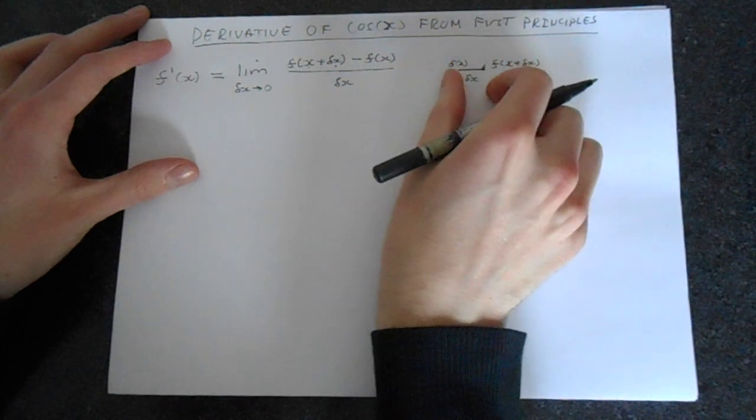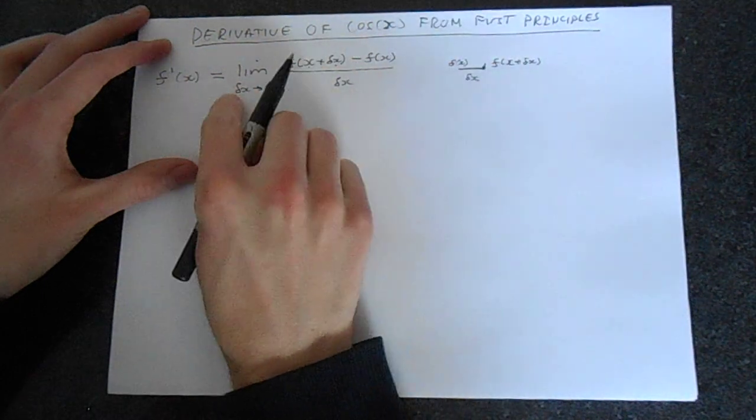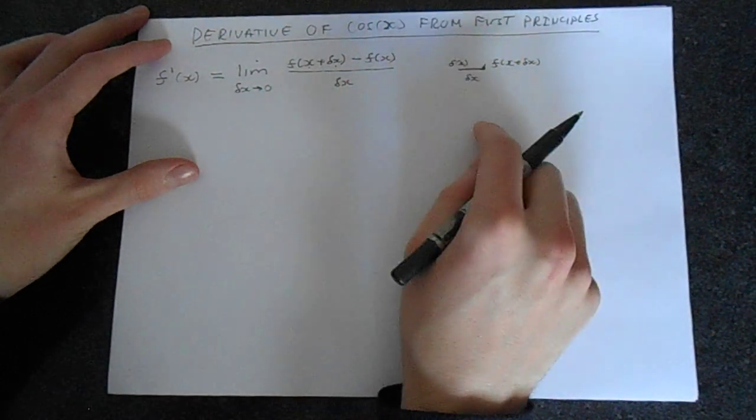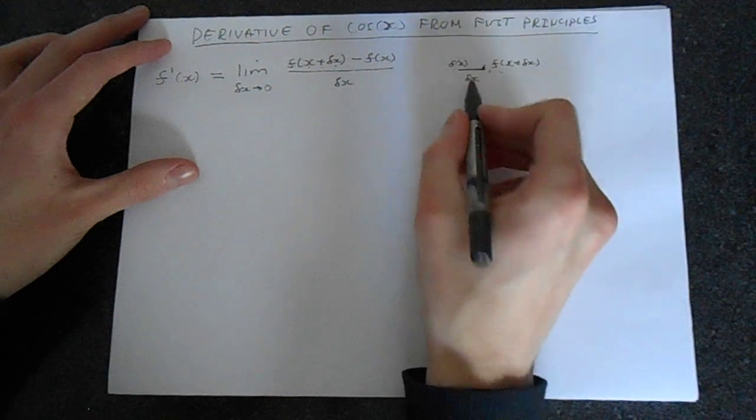This point here is f of x plus delta x, and here's f of x. So we've got like a distance here, and we're taking this distance to be tending to 0. So we're making this extremely small. So essentially here, we're getting a gradient. Difference between these points divided by this.